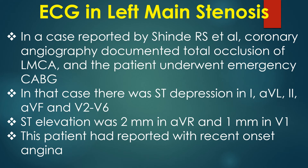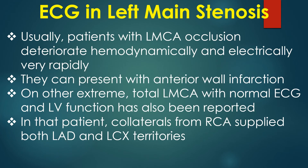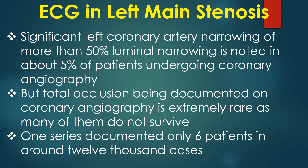This patient had reported with recent angina. Usually, patients with left main coronary occlusion deteriorate hemodynamically and electrically very rapidly. They can present with anterior wall infarction. On the other extreme, left main total occlusion with normal ECG and left ventricular function has also been reported, where collaterals from the right coronary artery supplied both left anterior descending and left circumflex territories. Significant left coronary artery narrowing of more than 50% luminal narrowing is noted in about 5% of patients undergoing coronary angiography, but total occlusion documented on angiography is extremely rare, as many do not survive. One series documented only 6 patients in around 12,000 cases.